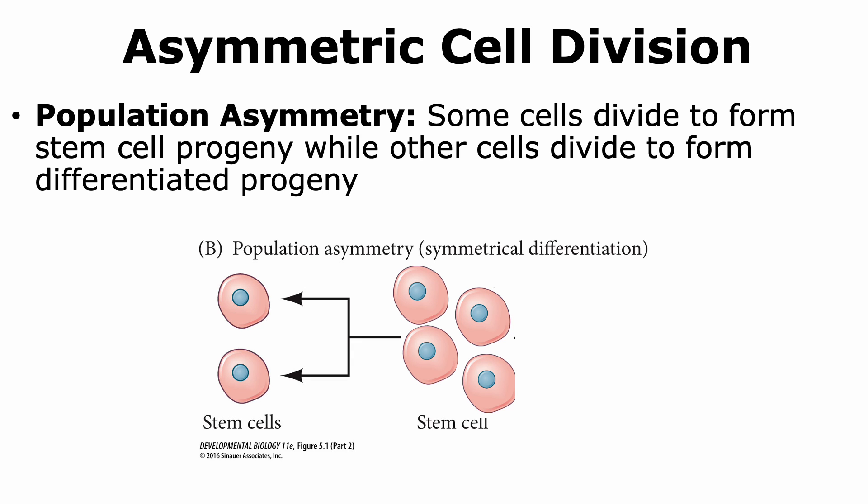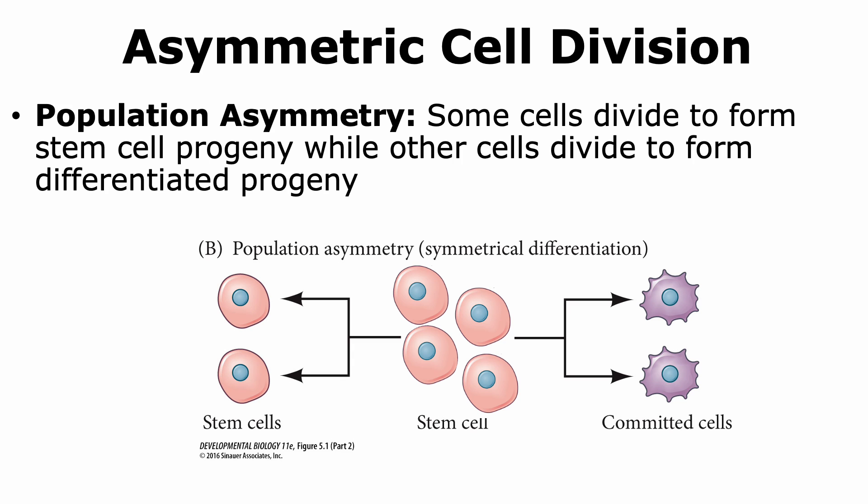Another type of asymmetric cell division is population asymmetry. In this case, when you look at the pool of stem cells, some cells will divide to form stem cell progeny — so both daughter cells will be stem cells — while other stem cells, when they undergo cell division, will actually form differentiated progeny. So in this case, each cell shows symmetric cell division, but the population as a whole shows asymmetric cell division, because some stem cells will give rise to only progeny stem cells, whereas others will give rise to daughter cells that are committed or progenitor cells.